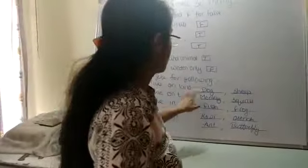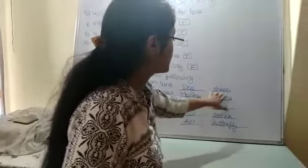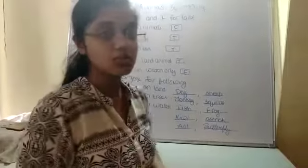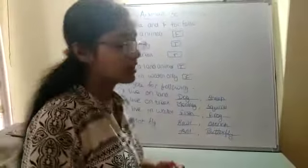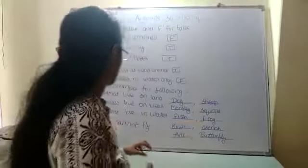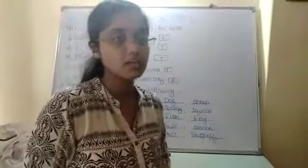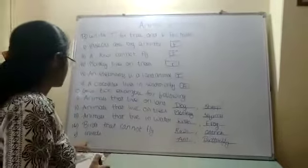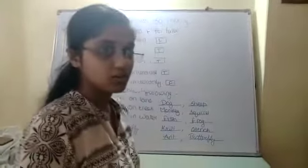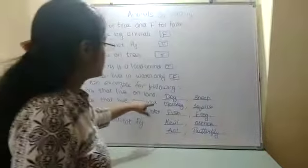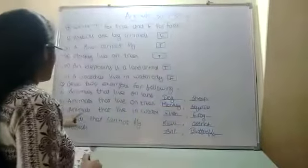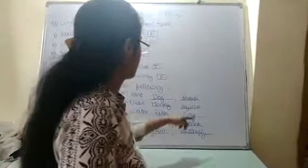Animals that live on land — examples: dog. Animals that live on trees — examples: monkey and squirrel. Animals that live in water — examples: fish and frog. Birds that cannot fly — examples: kiwi and ostrich. Insects — examples: butterfly.